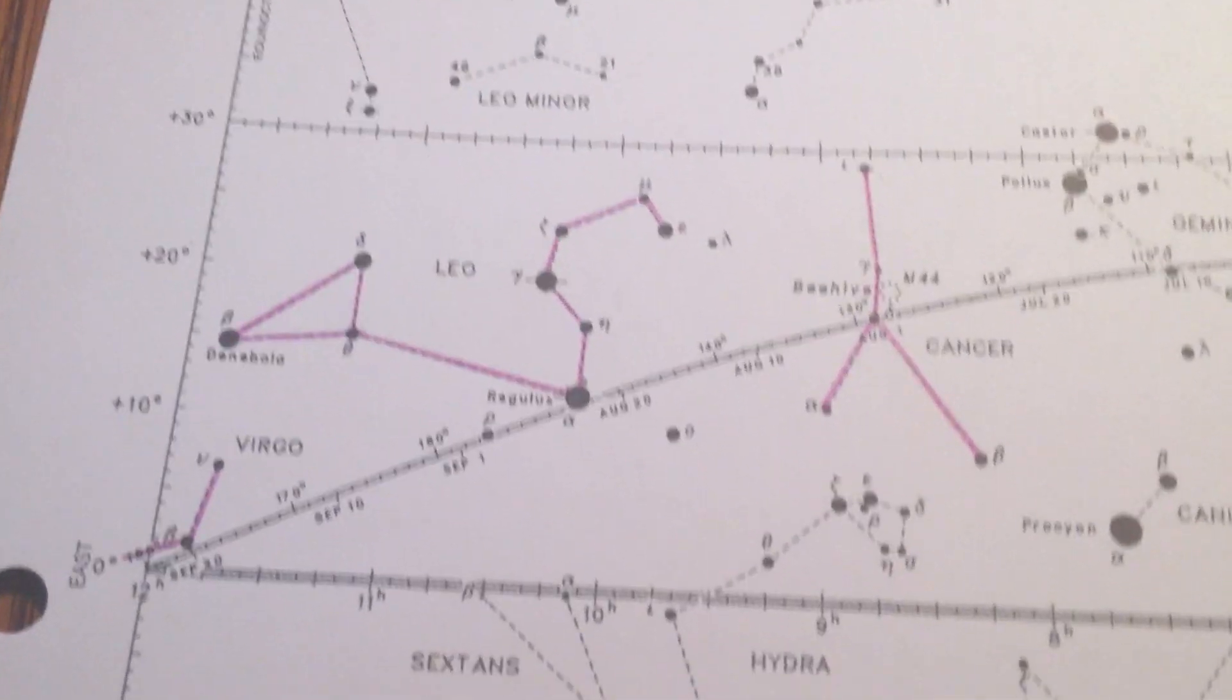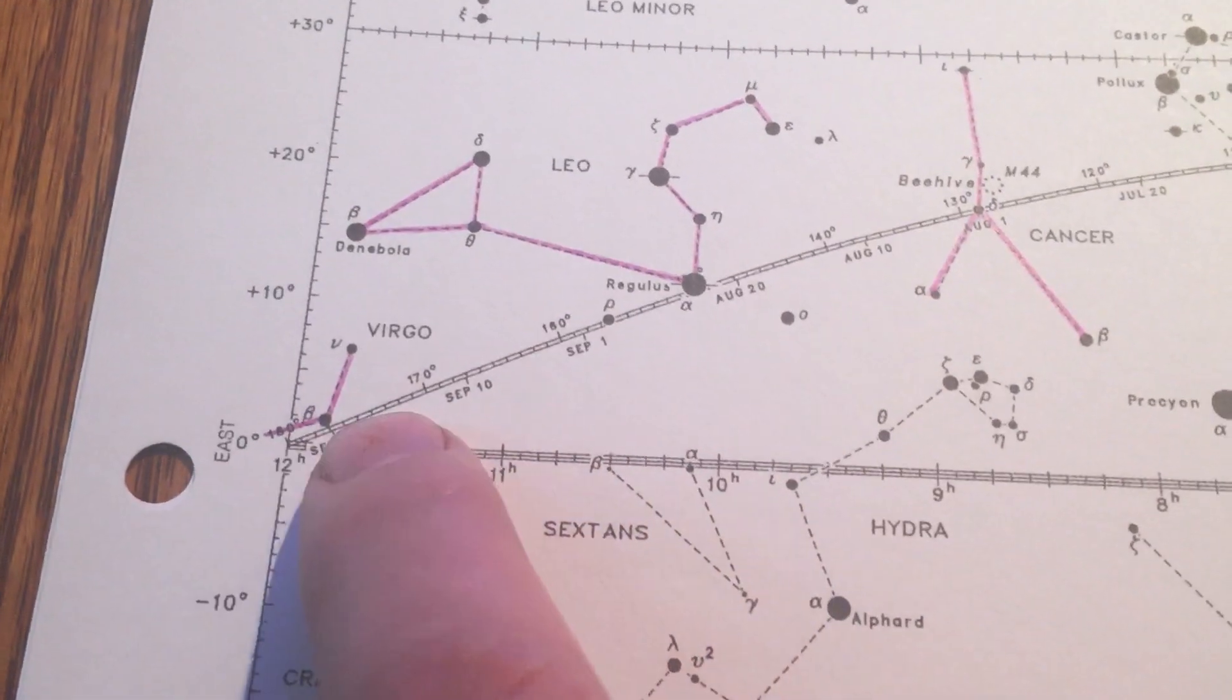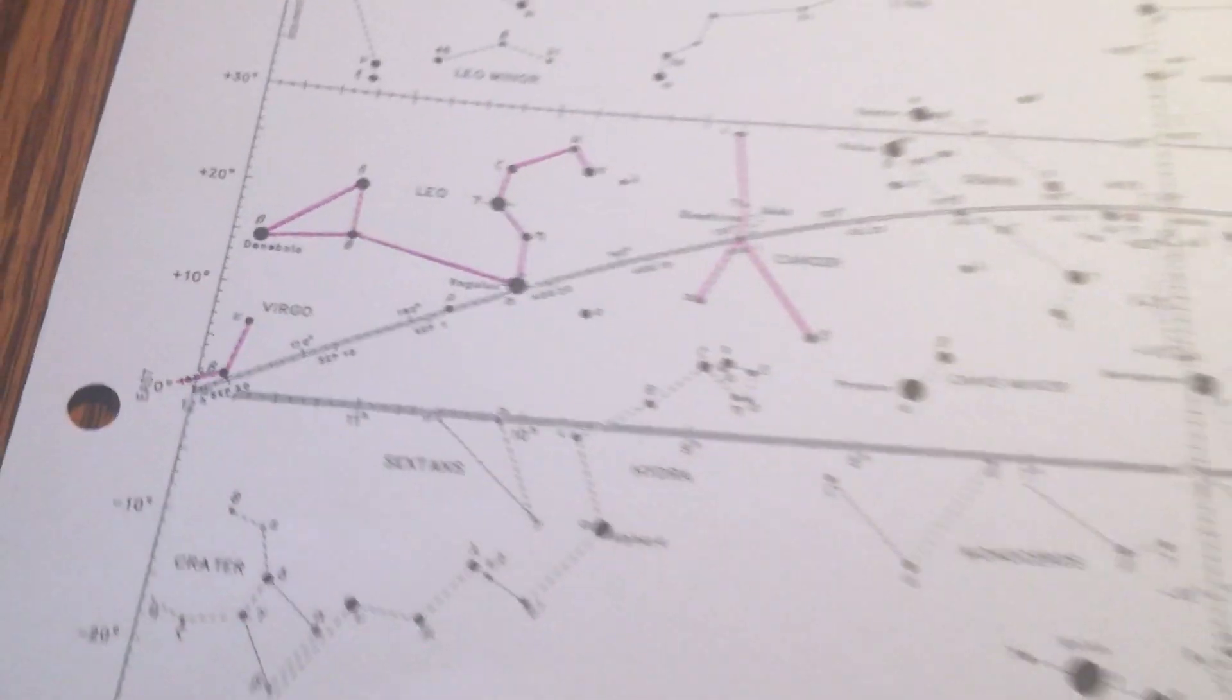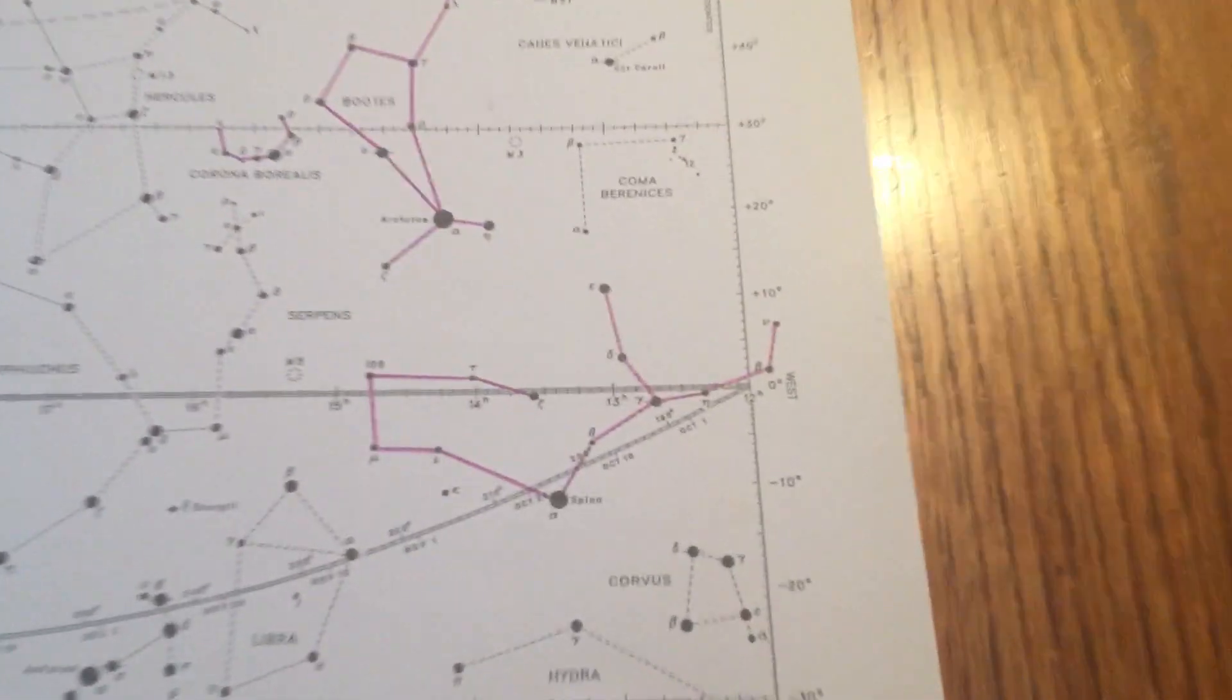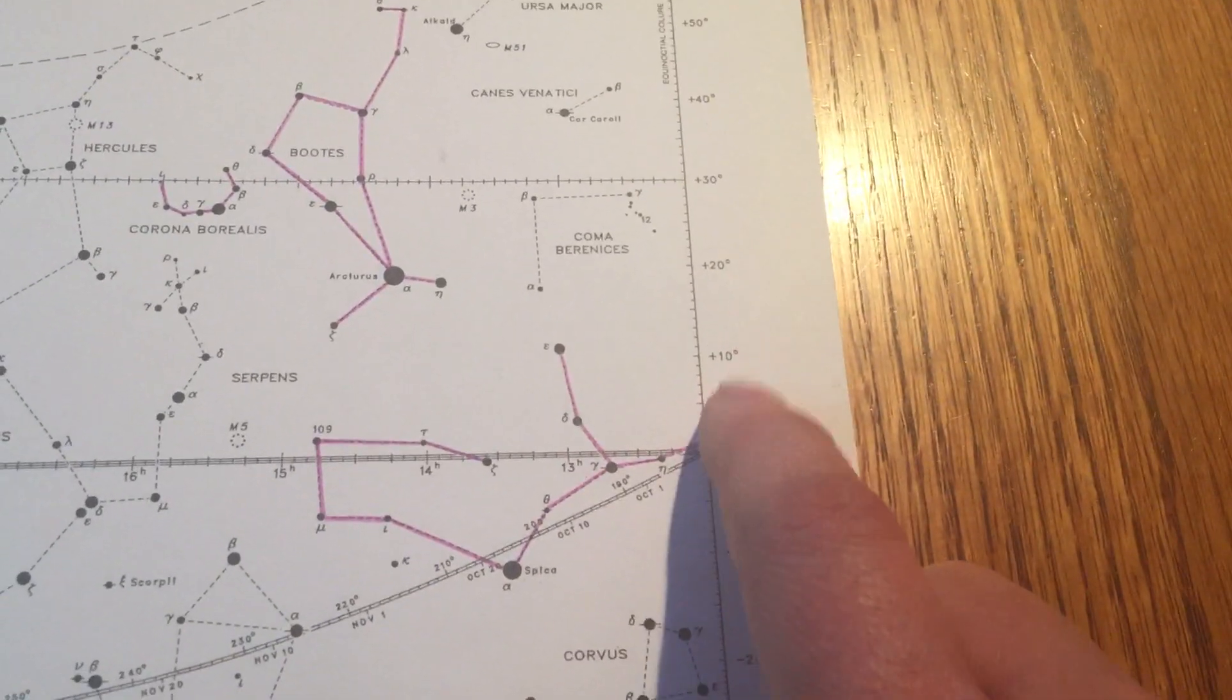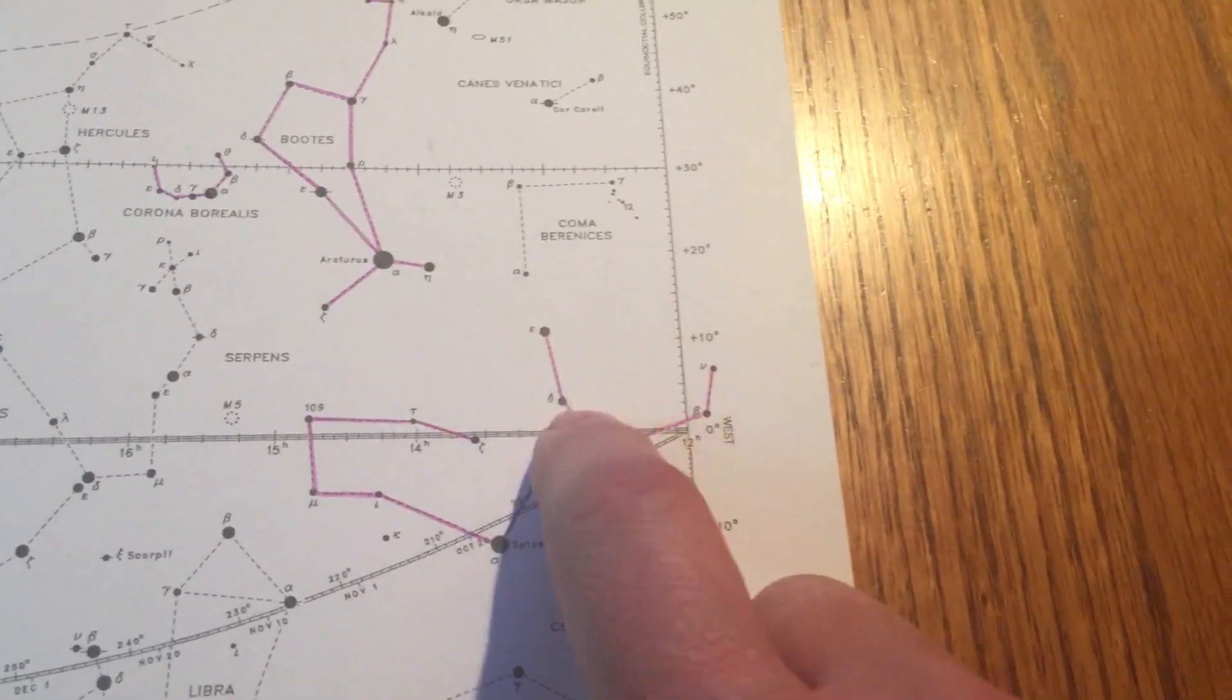Our next constellation, Virgo the maiden, is a little bit confusing on this chart. Here you'll see the name Virgo and you just get two little dim stars. Then just continue the line off the page. And then Virgo, remember these charts connect at the end. She continues over on this side of the chart. These are the two repeated stars. So I just remember V for Virgo, V for Virgo.